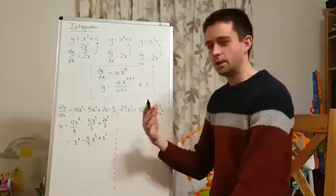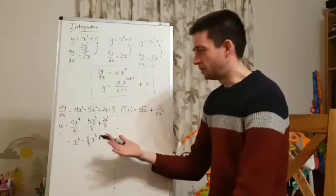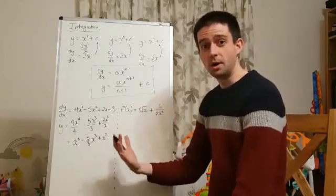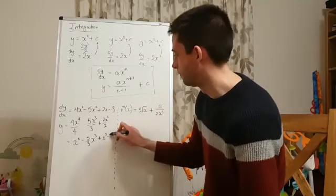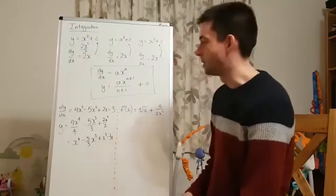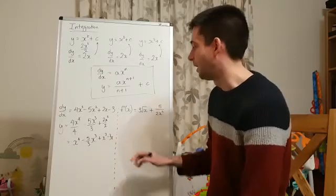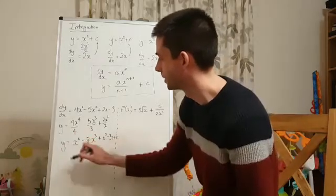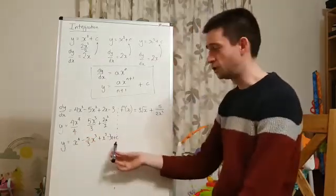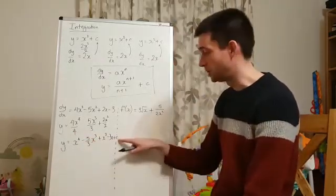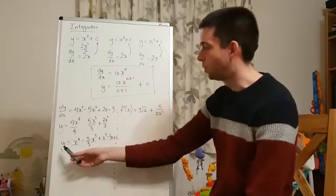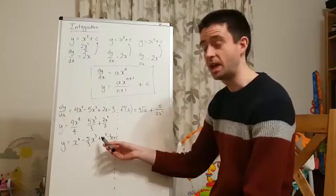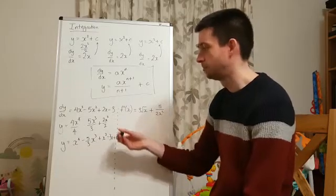And now minus 3. Just think a bit about what would we have differentiated to get just a number. Well, it would be that number times x. So, if we integrate minus 3, we get minus 3x, not forgetting, of course, the plus c. So, our general solution for y, calling it general because we don't know this number, y equals x to the power of 4, minus 5 over 3x cubed, plus x squared, minus 3x, plus c.